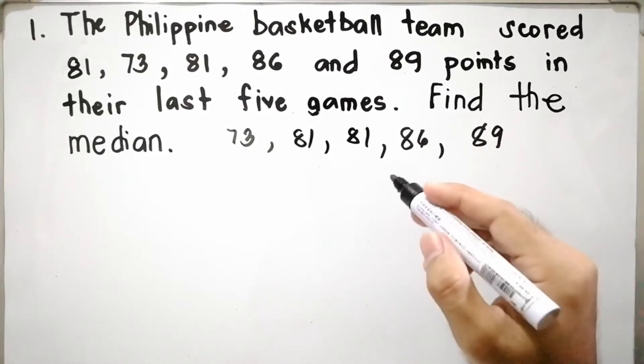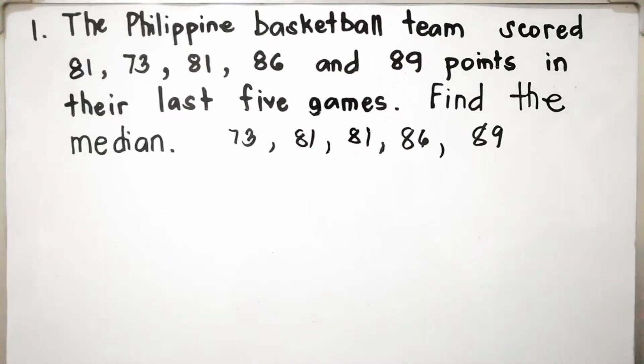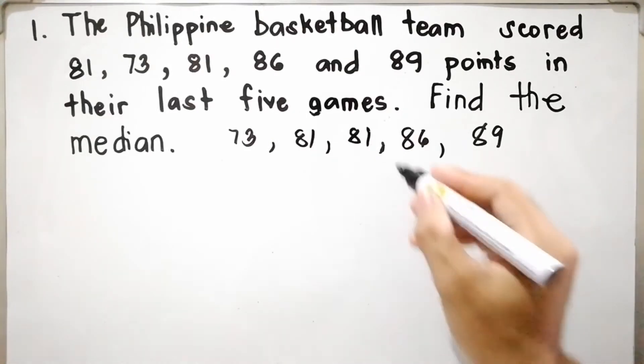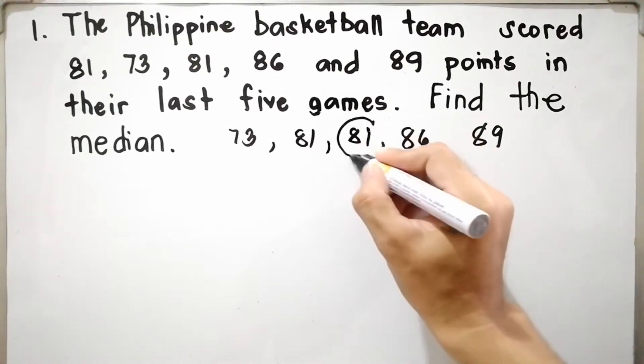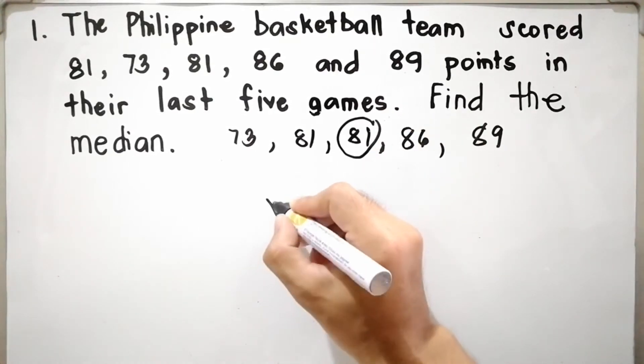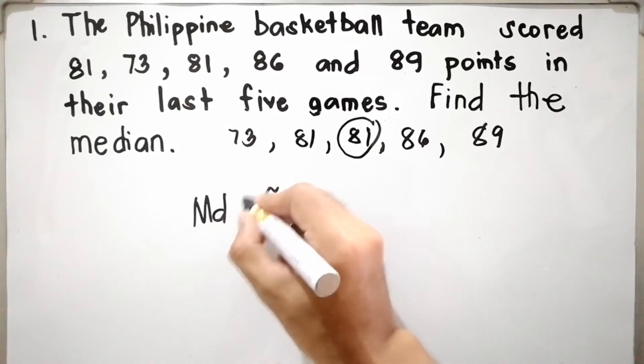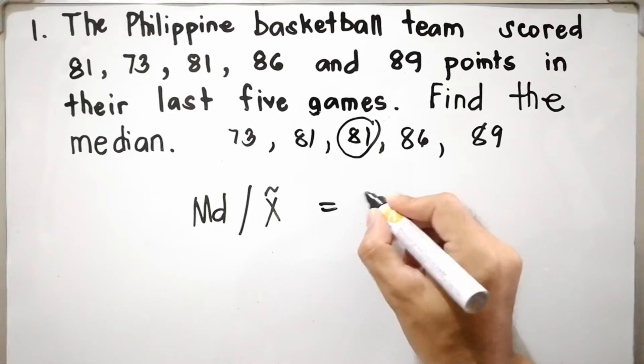Now we can get the median. The median is the middle value, and the middle value here is 81. Therefore, the median, denoted as x-tilde or MD, is equal to 81.